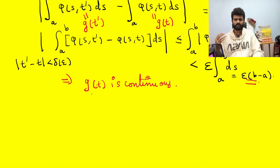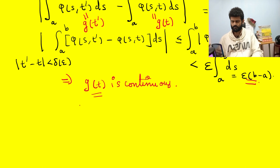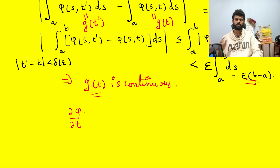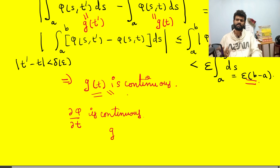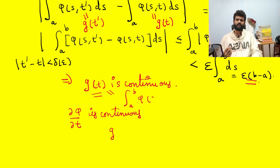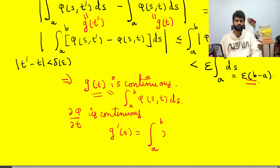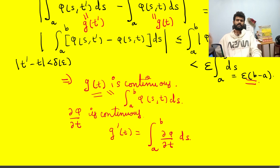We have proved that the function g(t) is continuous. The next part of the proof is: if the derivative of φ with respect to t is continuous, then we have to show that we can take the derivative of g(t). Basically, g(t) is integral from a to b of φ(s,t) ds, and the derivative is given by the integral from a to b of ∂φ/∂t ds.